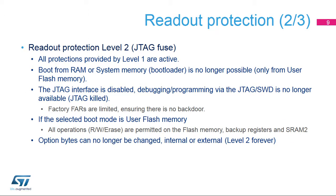Level 2 provides the same protection features for the SRAM2, flash memory, and backup registers as described for Level 1. However, there are three major differences. The JTAG SWD debugger connection is disabled, even at the ST factory, to ensure that there are no backdoors. The boot mode is forced to user flash memory, regardless of the boot 01 settings, and Level 2 is permanent — once set to Level 2, there is no going back.